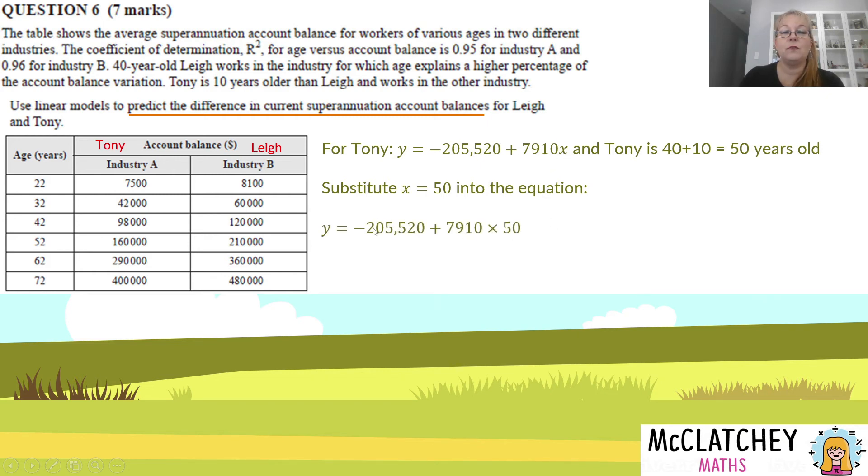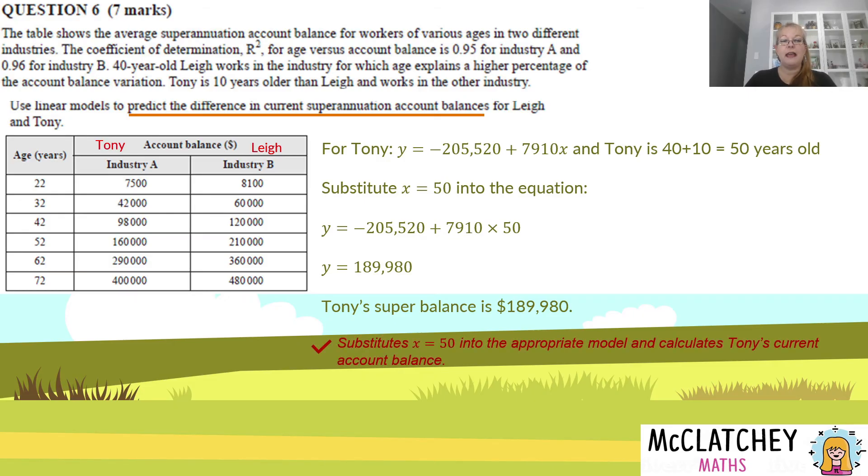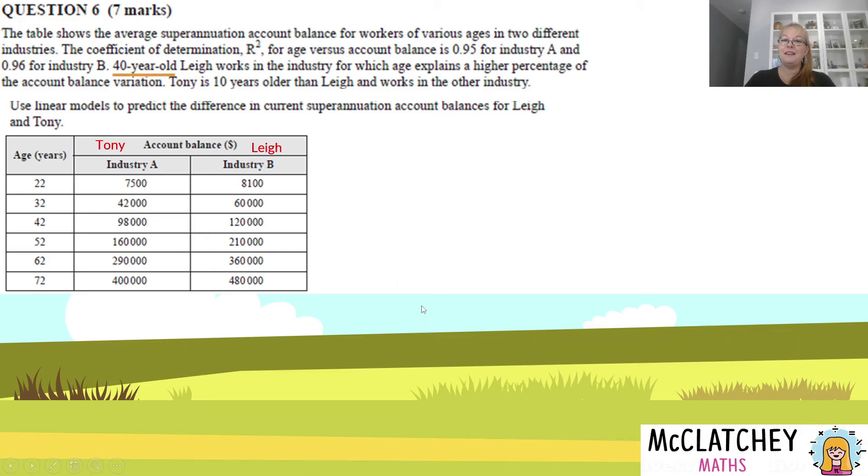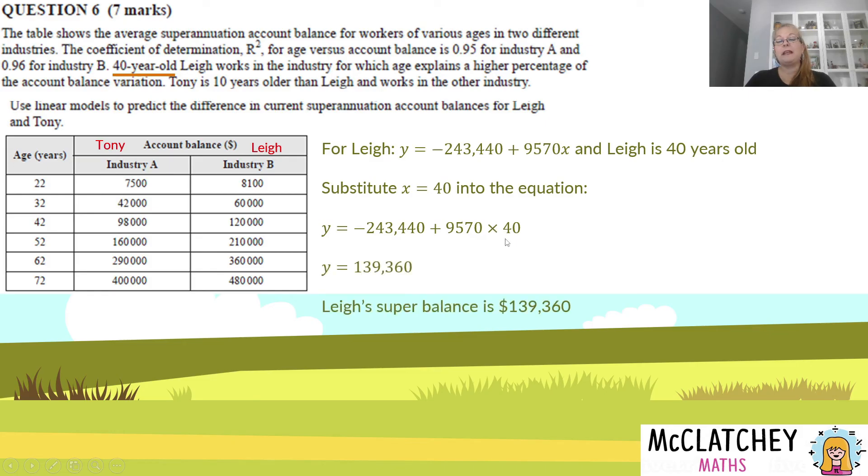We now have our next mark because we substituted x equals 50, Tony's age, into the right equation and worked out his balance. Now we need to repeat for Lee. There's Lee's equation. We know Lee's 40, so we're going to substitute x equals 40 into the equation. We're going to work out that Lee's super balance is $139,360. We get our next mark for substituting x equals 40 into the industry B equation. We're almost there.